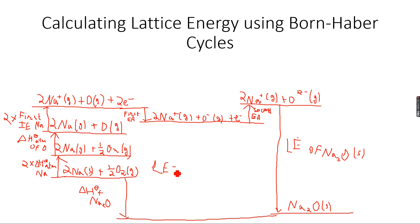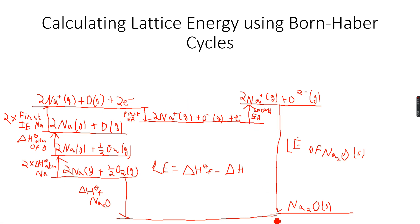We use the same formula: LE = ΔH°f minus ΔH, and that's how you can calculate lattice energy. ΔH is basically the sum of all these energies — all the steps up to 2 Na⁺ and O²⁻.